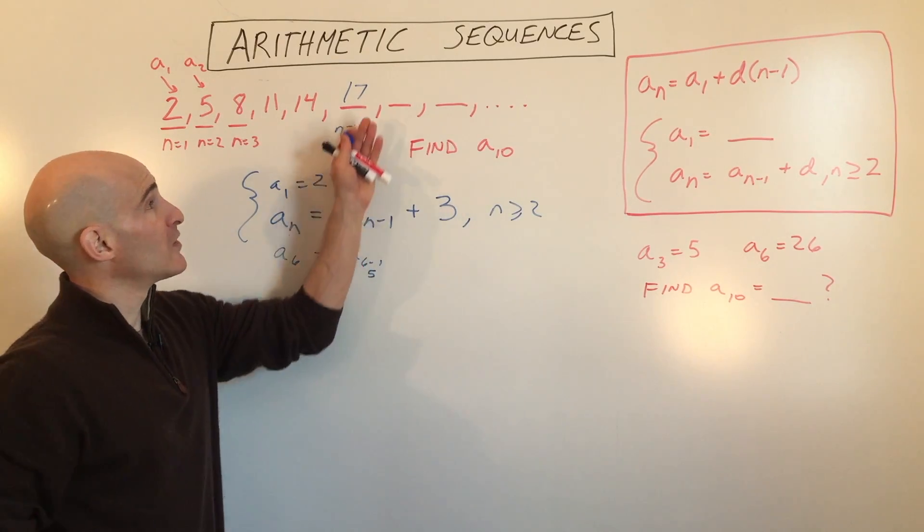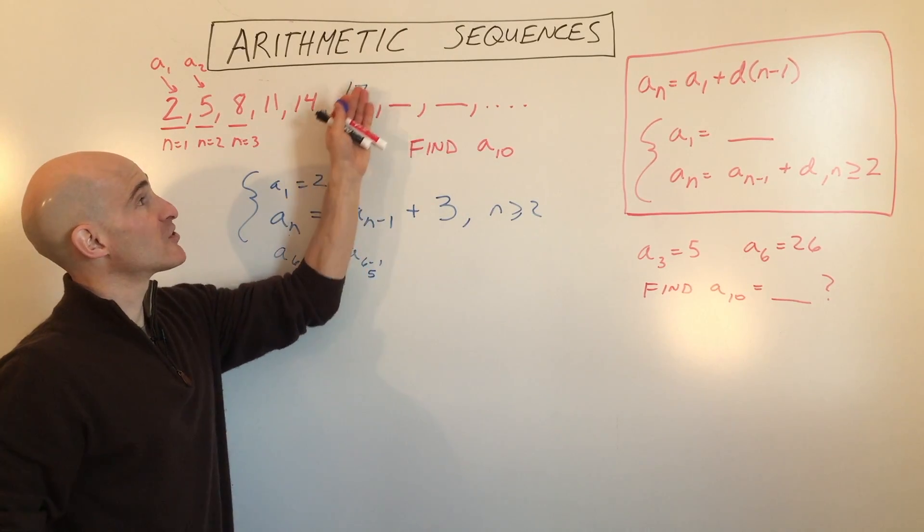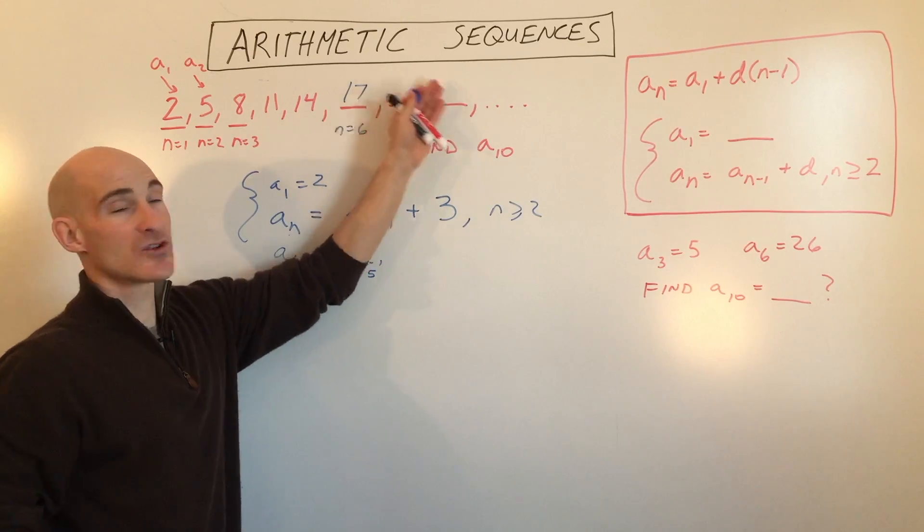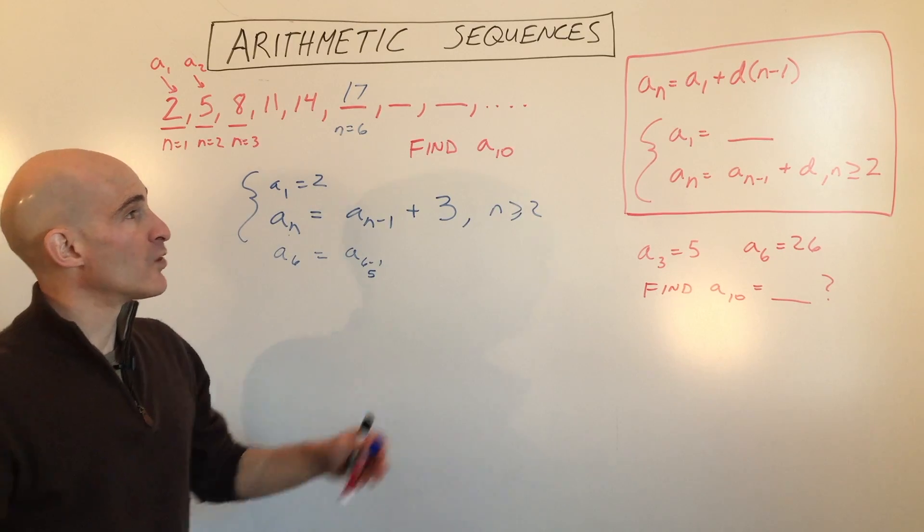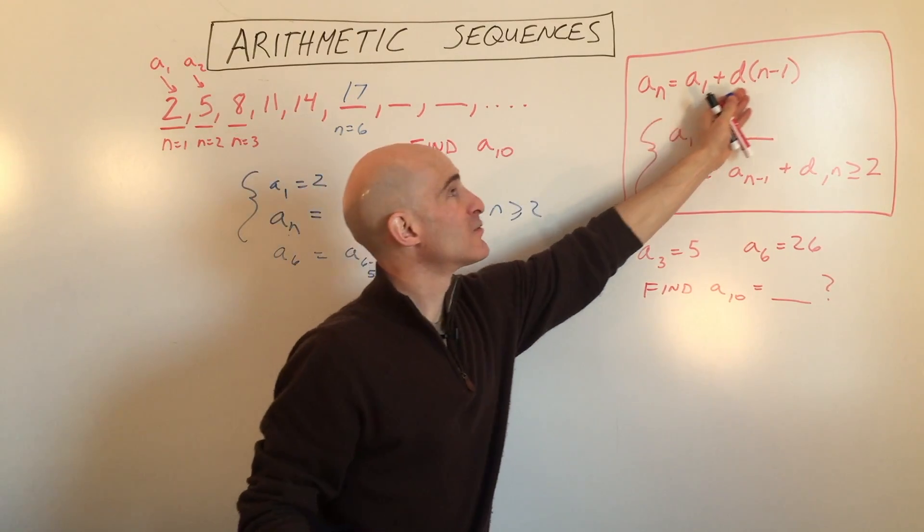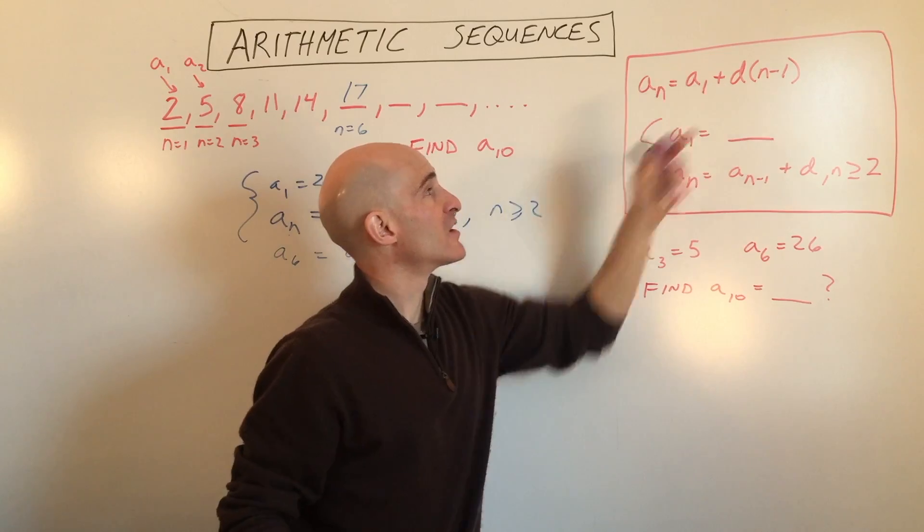Now, if we wanted to find the 100th term, we'd have to keep going to the previous term, adding 3, and going to the previous term, adding 3. That would take a long time for us. For a computer, it would be really quick, but what's going to work a little bit better here is if we write an explicit formula, and that's what this one here shows us.